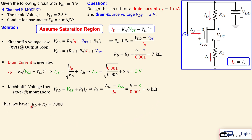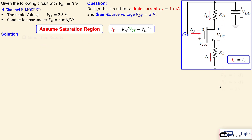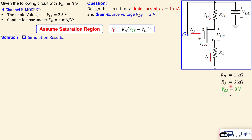Since RD plus RS equals seven kilo-ohms and RS equals six kilo-ohms, RD equals seven thousand minus six thousand, which is one kilo-ohm. We now have the independent values of both resistors calculated.